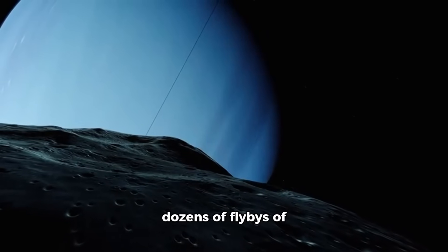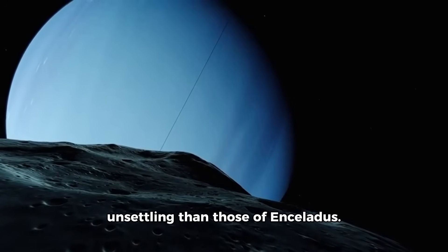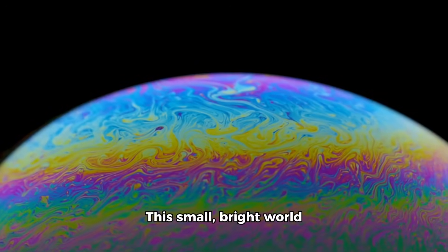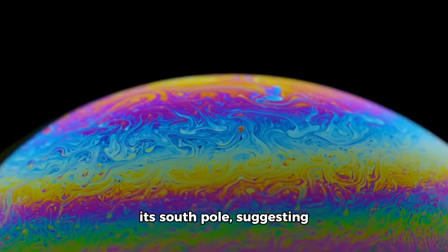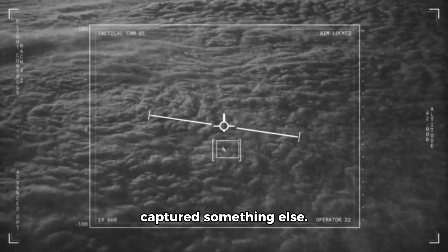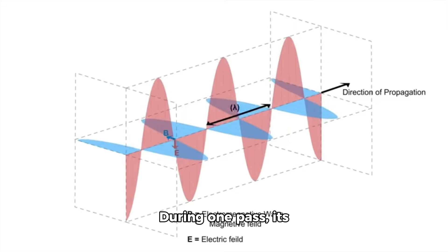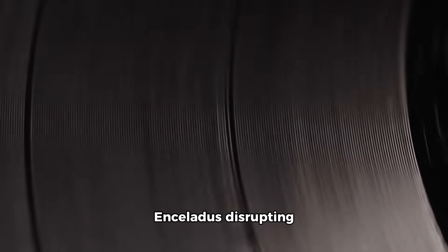Cassini performed dozens of flybys of Saturn's icy moons, but none more revealing or unsettling than those of Enceladus. This small, bright world spews plumes of water vapor from fractures in its south pole, suggesting a subsurface ocean heated by tidal friction. But Cassini's final flybys captured something else. During one pass, its magnetic field instruments picked up a deflection that didn't match known models. It wasn't just Enceladus disrupting Saturn's magnetic lines. It was something underneath the moon reacting, almost as if the probe's presence had triggered a shift.